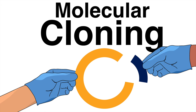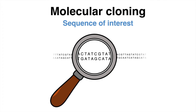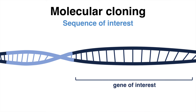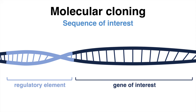Before embarking on the cloning journey, scientists must first identify the specific DNA fragment they wish to clone. This fragment could represent a gene of interest, a regulatory element such as a promoter region, or any other sequence that holds importance in their research.